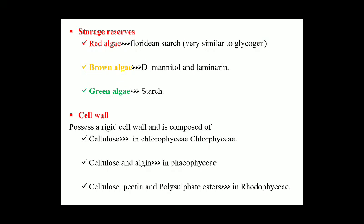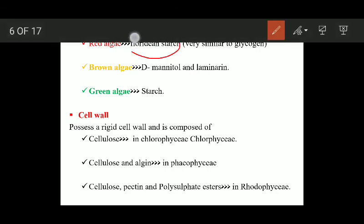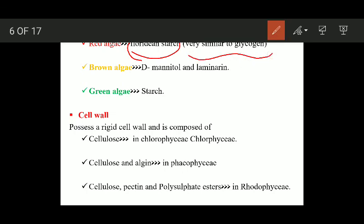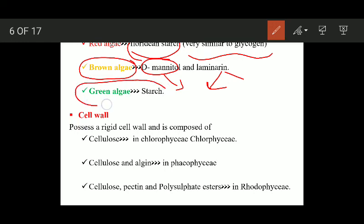Now the storage reserves in algae. Different groups of algae store food material in different forms. Red algae store food in the form of floridian starch, which is very similar to glycogen found in animals. Brown algae store D-mannitol and laminarin as their reserve food materials — laminarin is a complex carbohydrate while D-mannitol is a type of alcohol. Green algae store starch, just like higher plants.